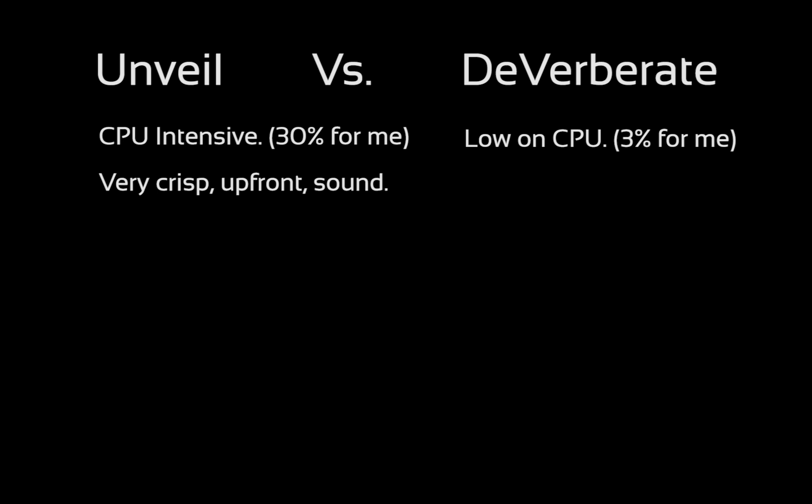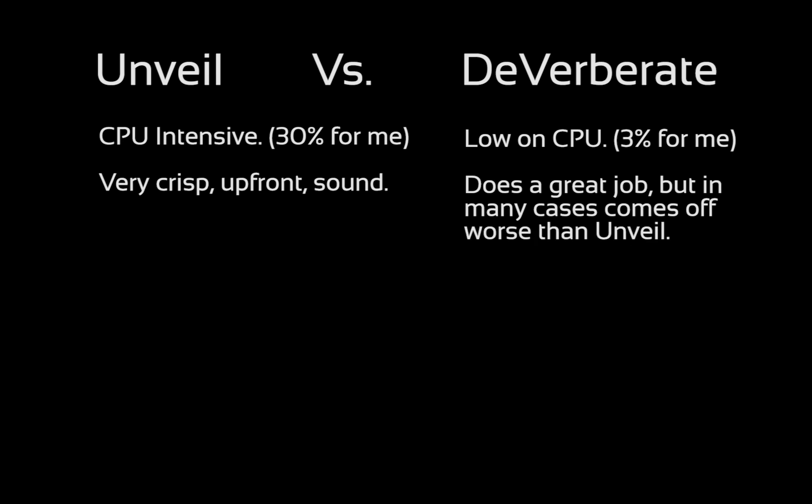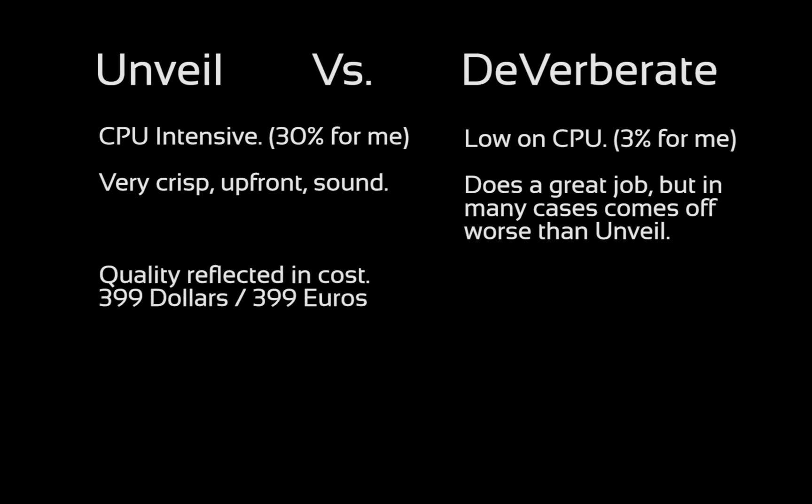Unveil has a consistently crisper sound and can place even a washed out recording right in front of your face. Deverberate, on the other hand, is perfectly good at removing reverb on easy recordings, but does struggle with tougher recordings. While Unveil outclasses Deverberate on most counts, this is reflected in the CPU hit and also in the price, with Unveil costing $399 or 399 euros, and Deverberate costing just $99.90.